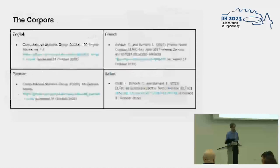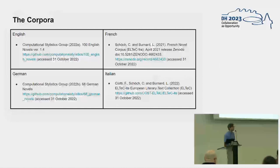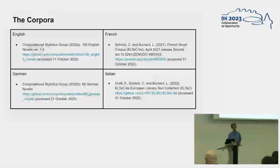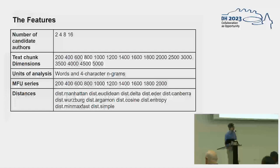To answer this question with a more interlinguistic perspective, I worked with four corpora — English, German, Italian, and French. These corpora were taken from the Computational Stylistics Group but also from the LTECH collection in many different languages. I also used different features for the analysis, and between two and sixteen candidate authors, working with both few and many candidate authors.